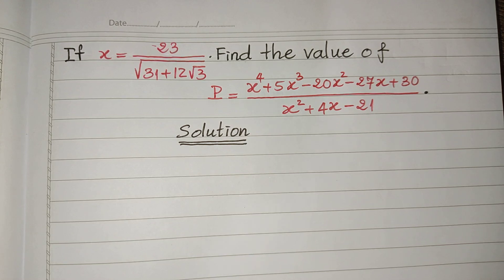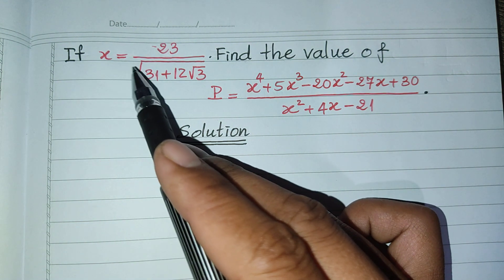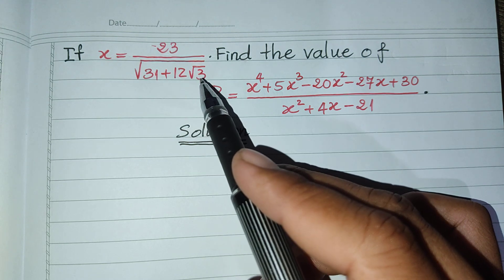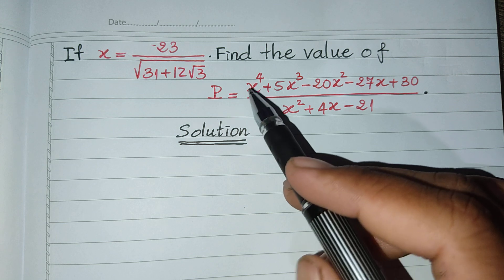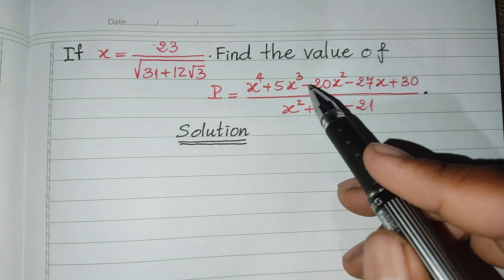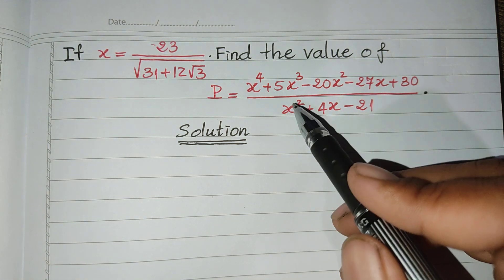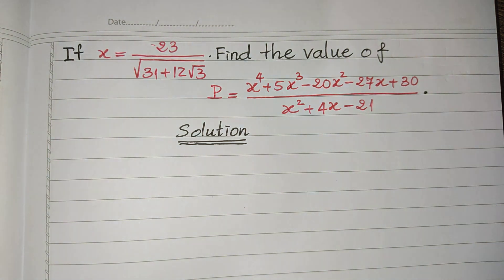Hello everyone, welcome to my YouTube channel. Today I have one exercise: if h equals 23 divided by the square root of 31 plus 12 square root 3, find the value of P equals h to the power 4 plus 5h cubed minus 20h squared minus 27h plus 30, all divided by h squared plus 4h minus 21. If you know how to solve this, please try it, then come back to verify your solution. Before we go to the solution, please subscribe to my channel for more exciting videos.